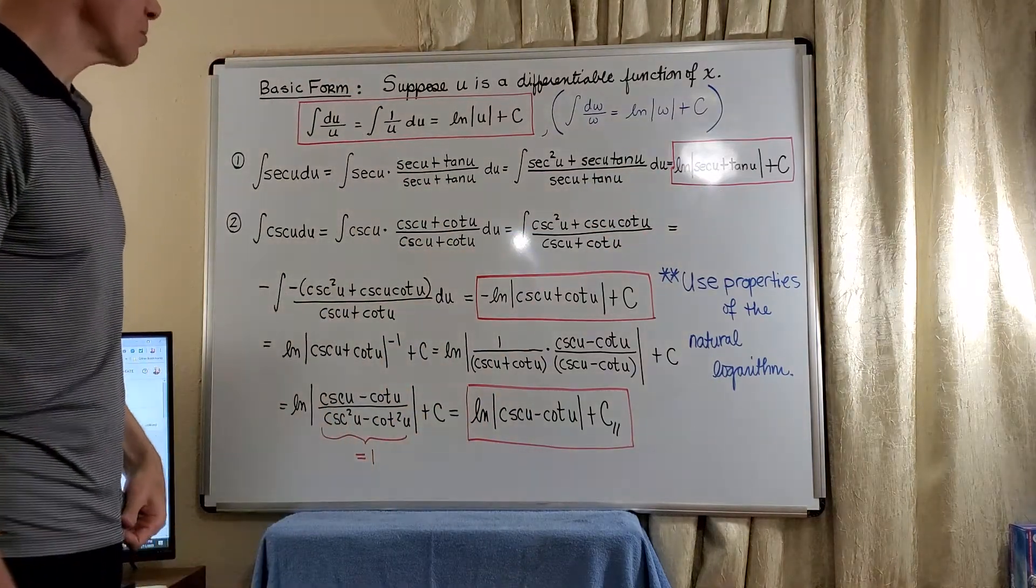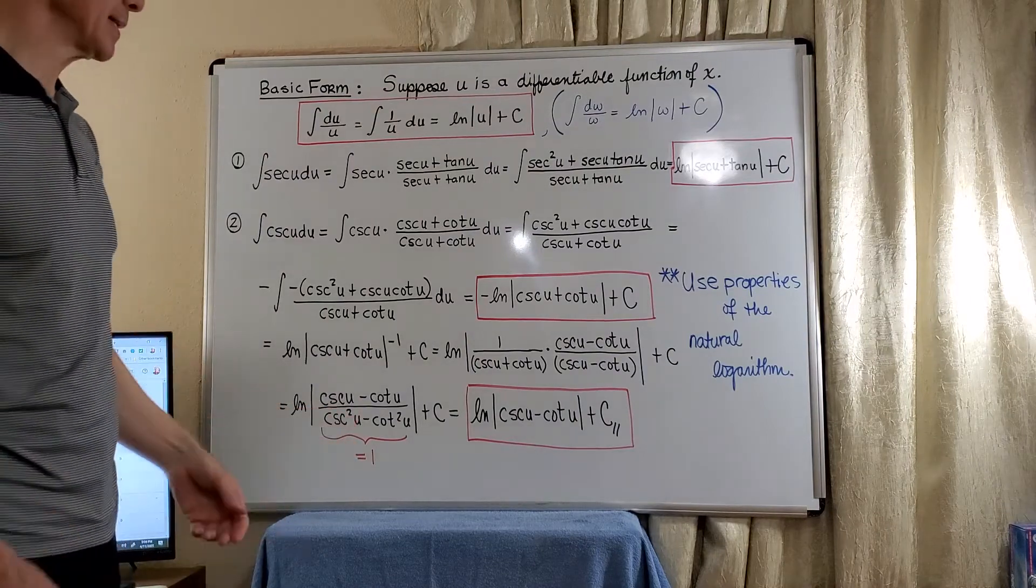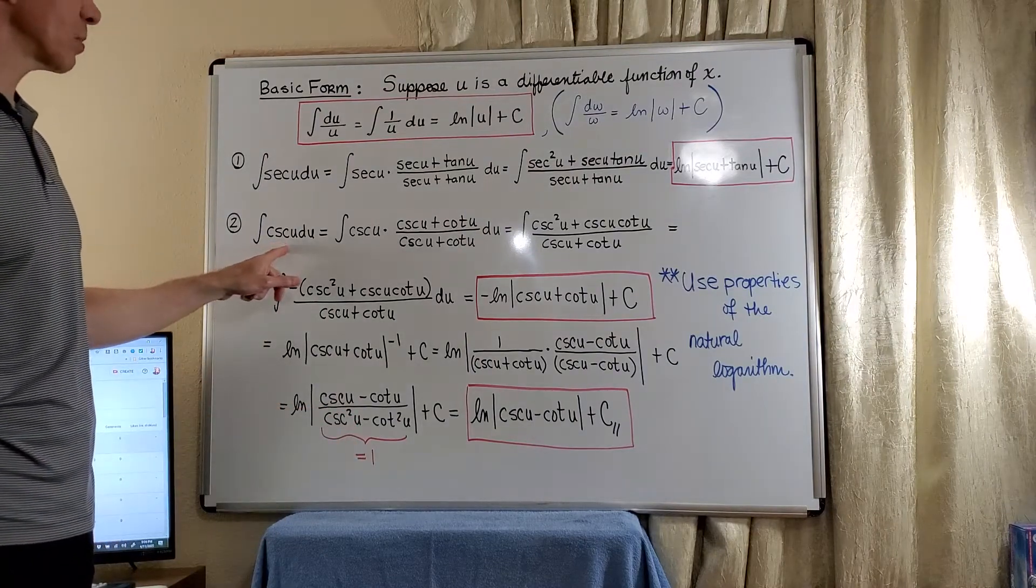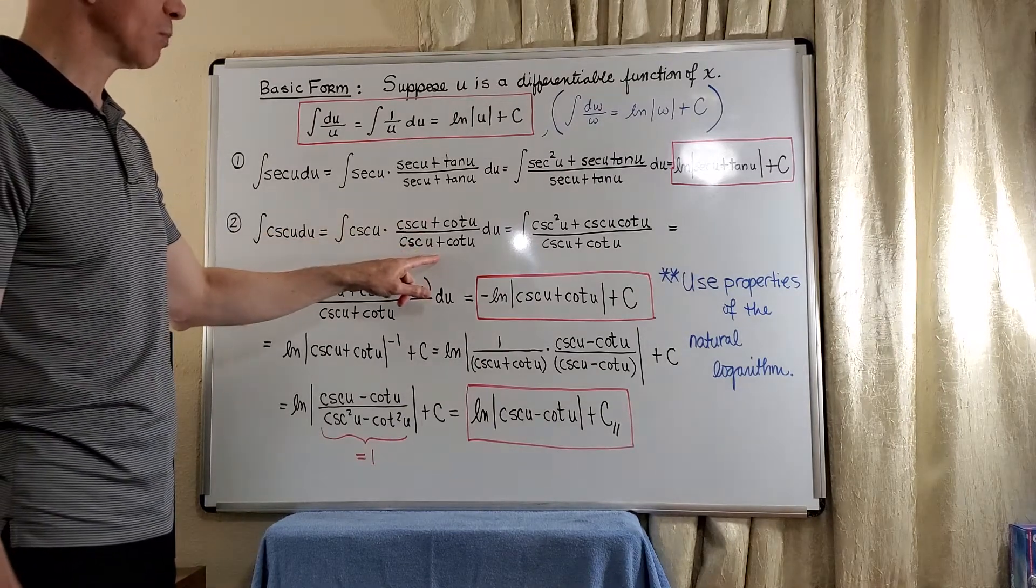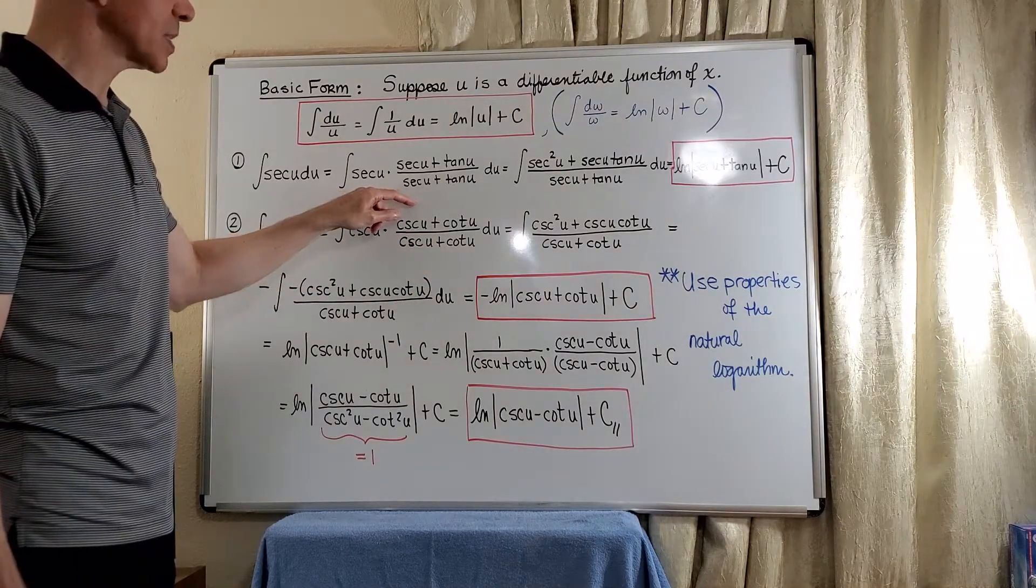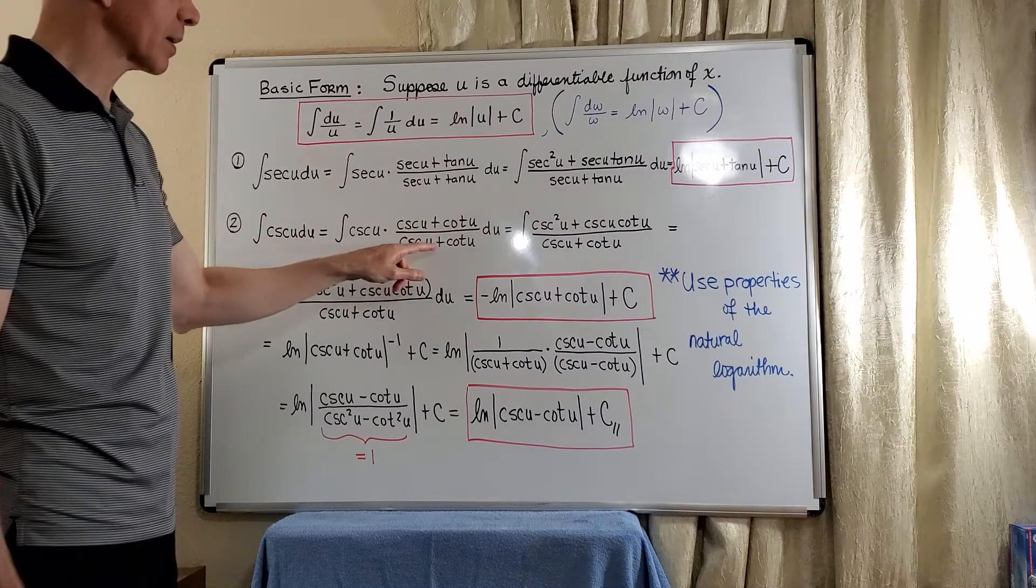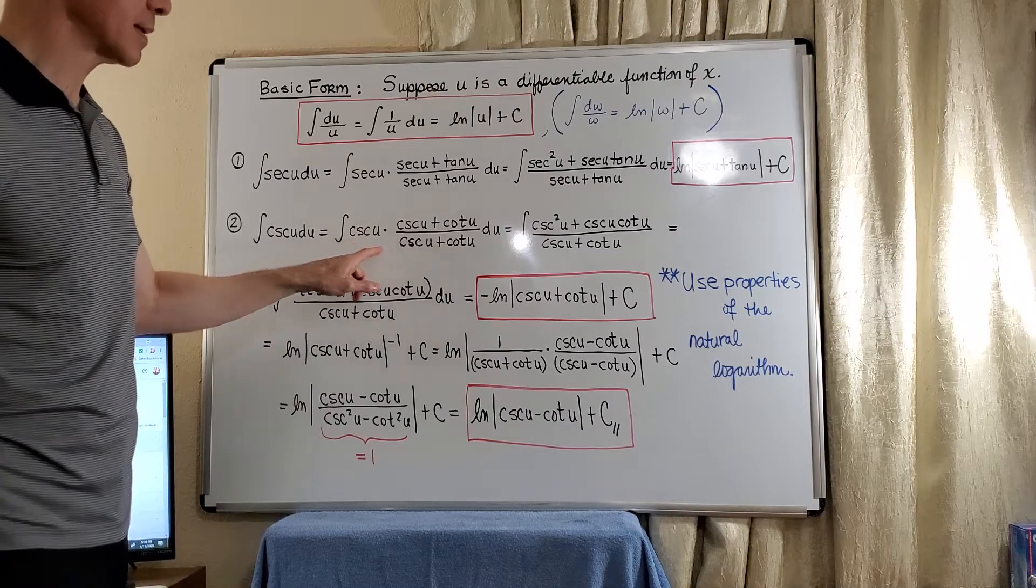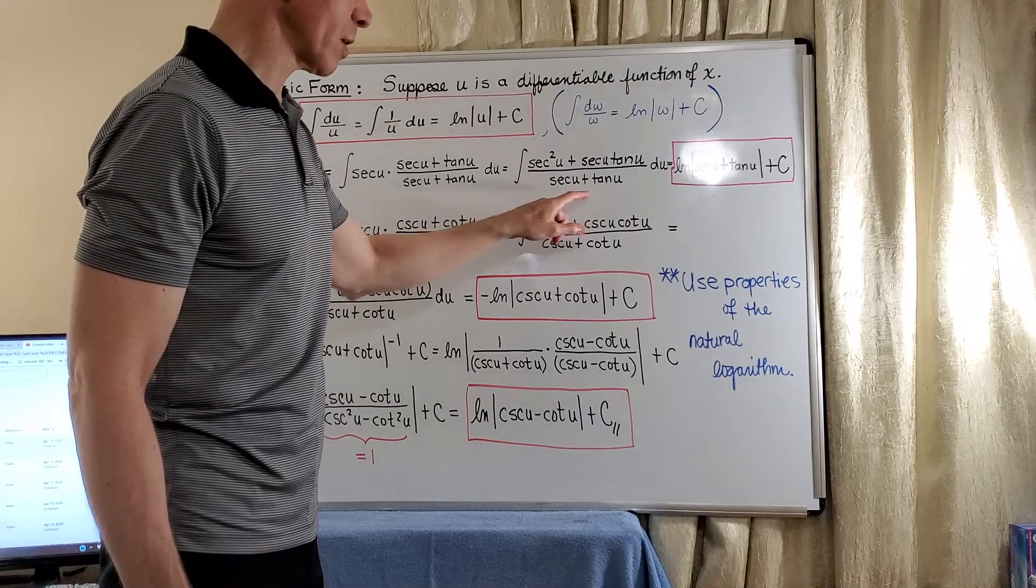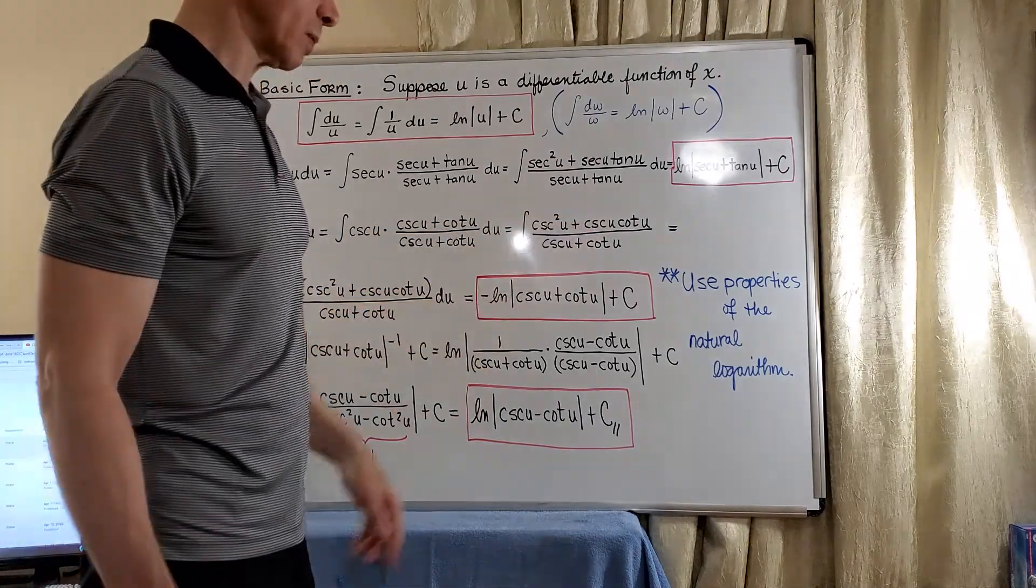Now, for the cosecant, we apply the same technique. That is, we start out with the cosecant of u du. And we multiply and divide by the convenient one, so to speak. That is cosecant u plus cotangent divided by cosecant u plus cotangent. And now we distribute the cosecant. And we get the cosecant squared plus cosecant u cotangent.